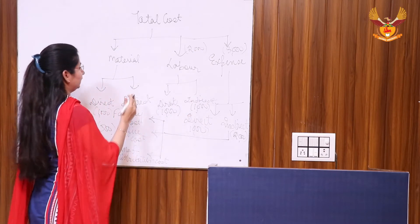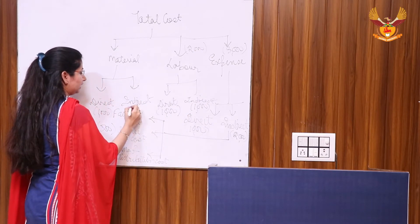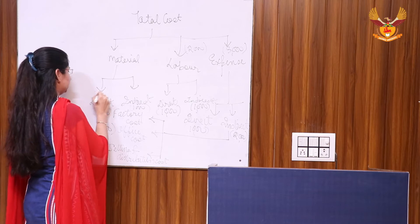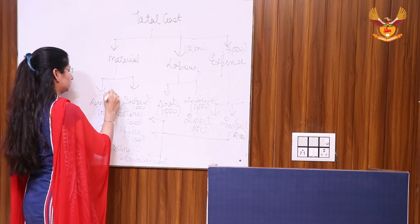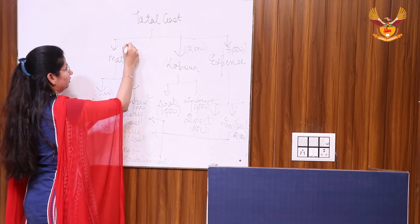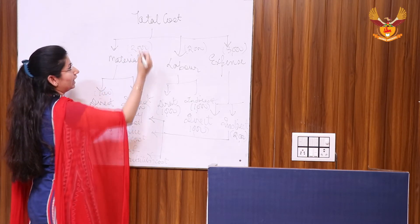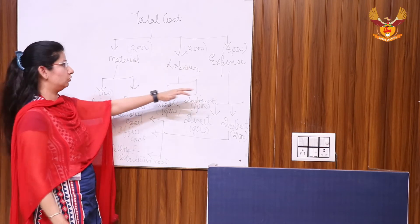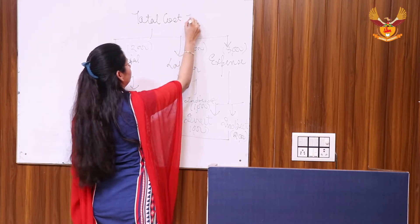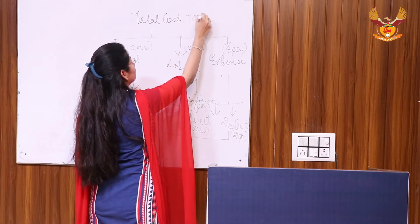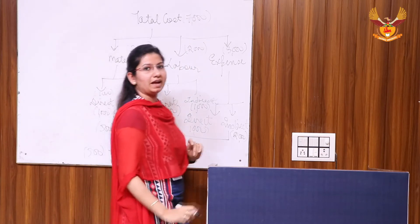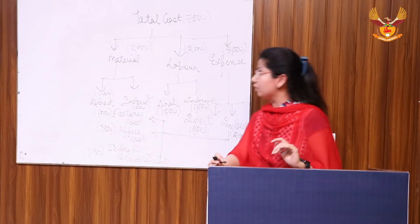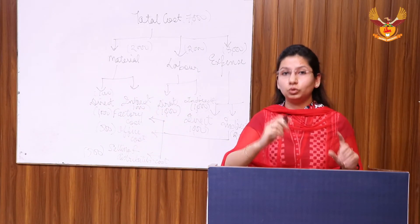For materials, if indirect material is 1,000 and direct material is also 1,000, the total material cost becomes 2,000. To calculate the total cost, we add all three: 3,000 (expenses) + 2,000 (labour) + 2,000 (material) = 7,000. This is how we actually calculate the total cost.